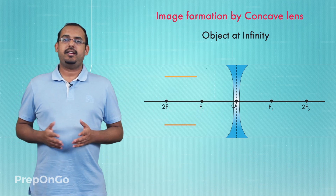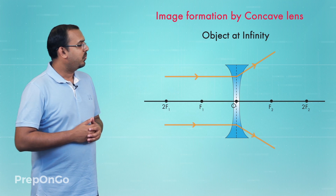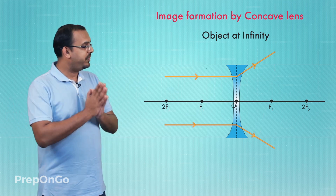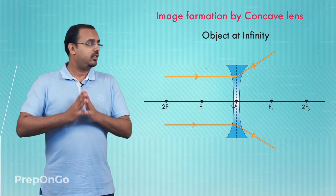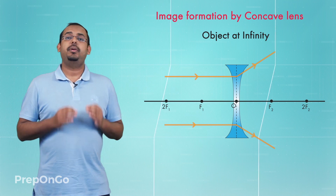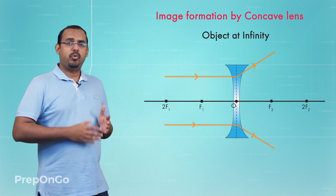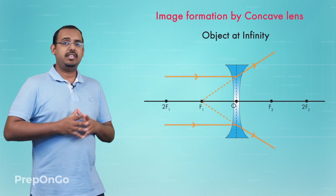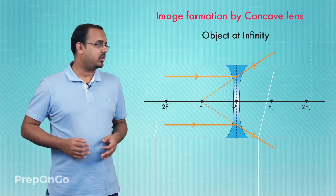We take two light rays coming from a point on this distant object, both parallel to the principal axis on either side of it. Both these rays will get refracted from the concave lens in such a way that they appear to be coming from the principal focus. If we extend the refracted rays backwards, we see that both rays appear to meet at the principal focus of the concave lens.